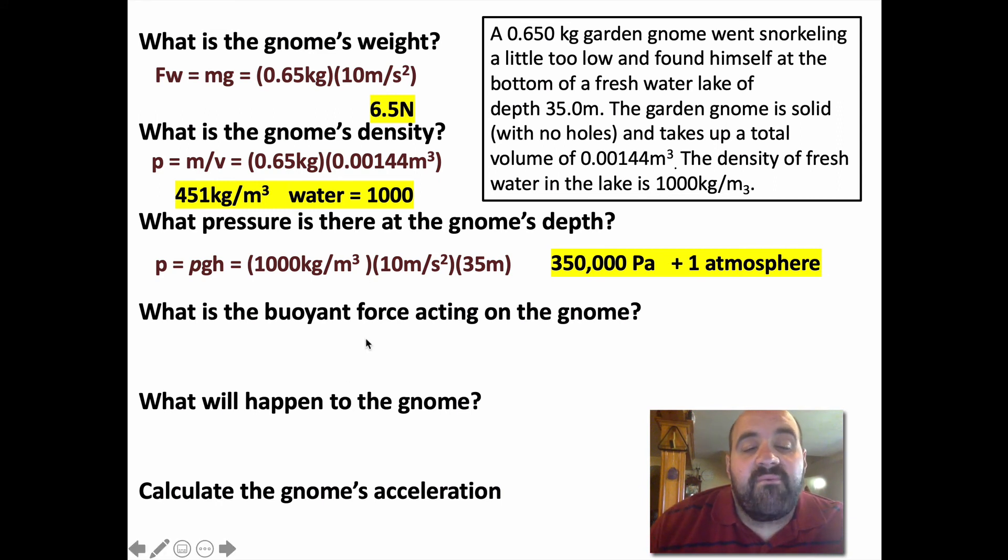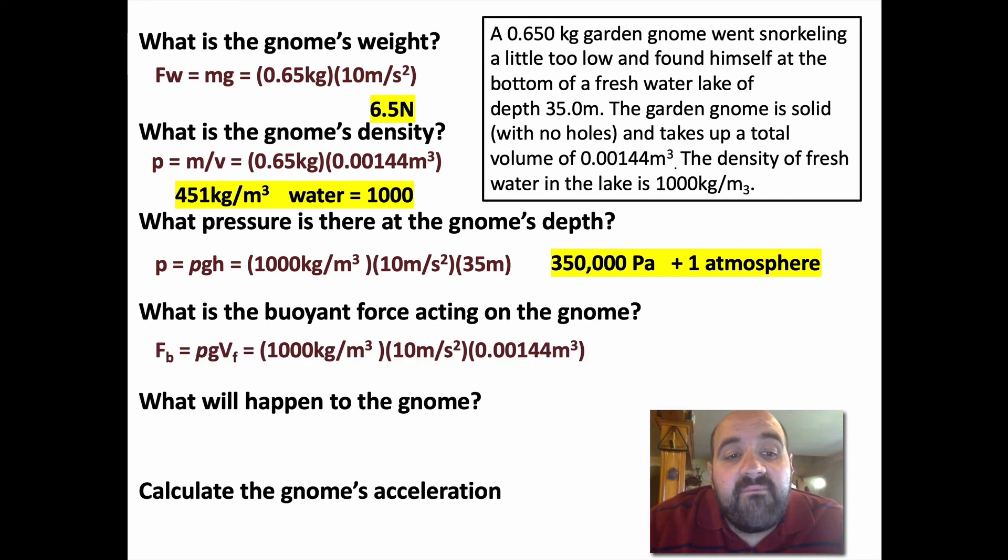What is the buoyant force acting on the gnome? We just figured that out. It's the weight of the fluid displaced. We also just came up with a formula for it. Buoyant force is ρg times the volume of the fluid displaced, or the volume of the gnome. The volume of the gnome is the volume of the fluid displaced. We know density, we know gravity, we know the volume. You just plug those numbers together and you get an answer. The buoyant force on the gnome is 14.4 newtons.